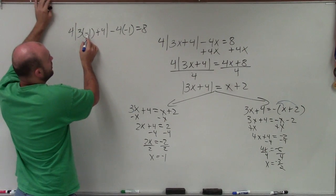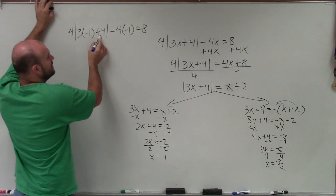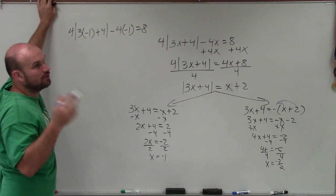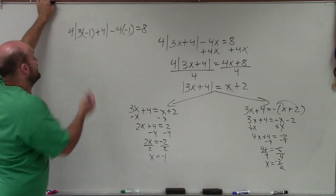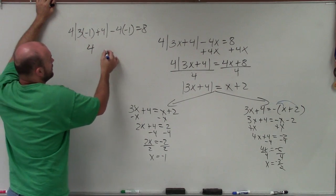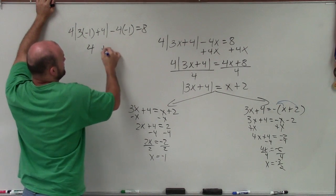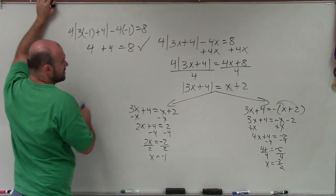Well, 3 times negative 1 is negative 3 plus 4, which is positive 1. Absolute value of positive 1 is still 1, right? And then times 4 is going to give you 4. Negative 4 times negative 1 is positive 4 equals 8, and you can see, yes, that works.